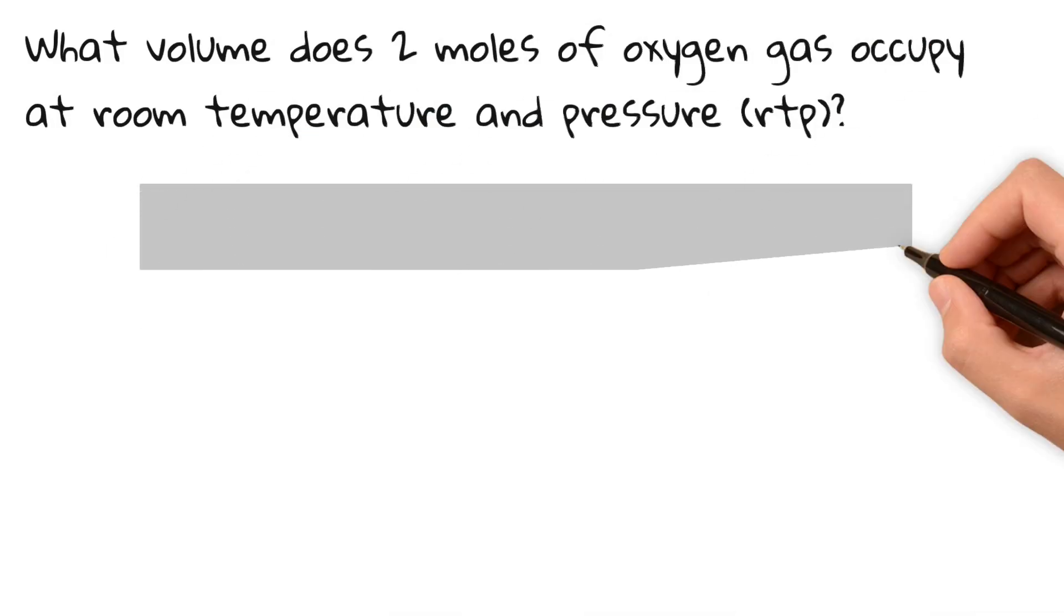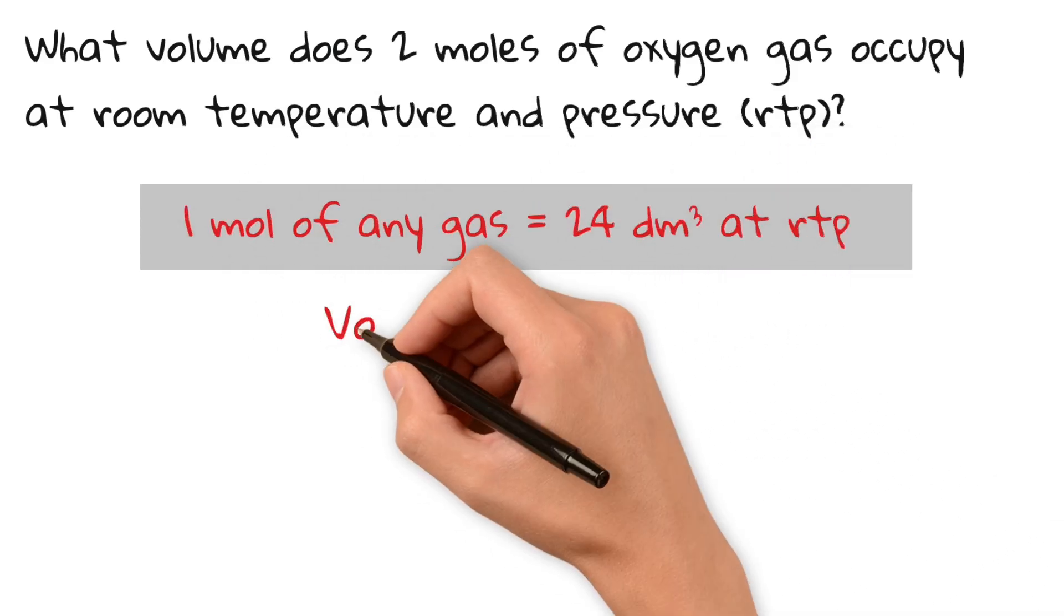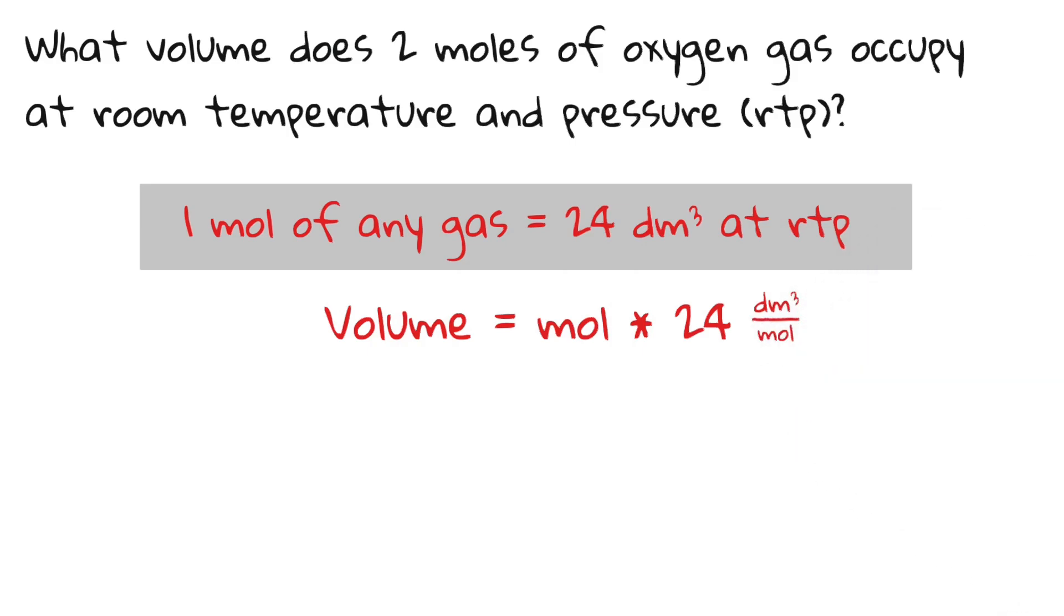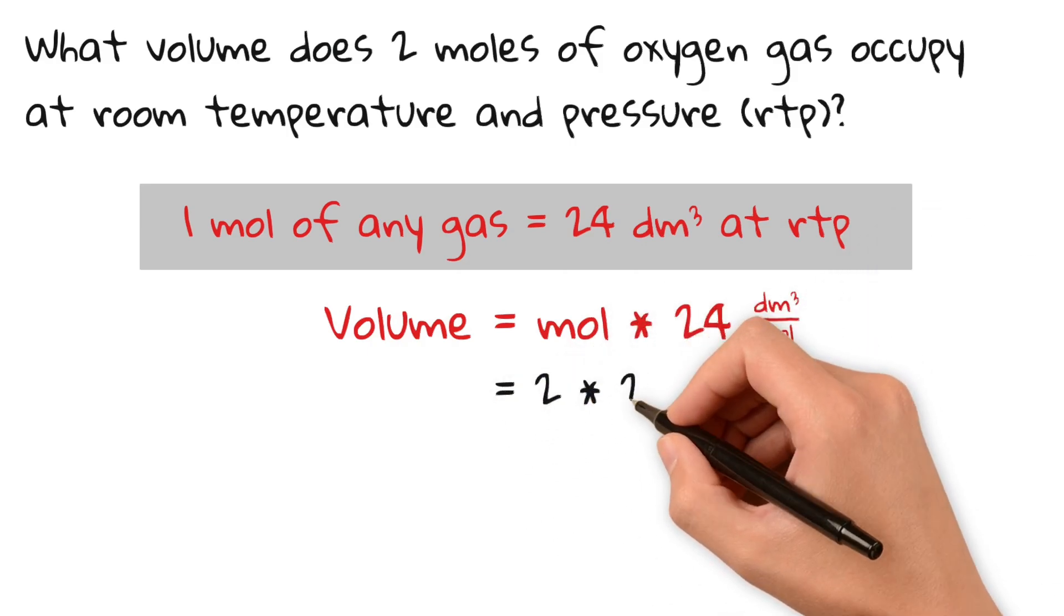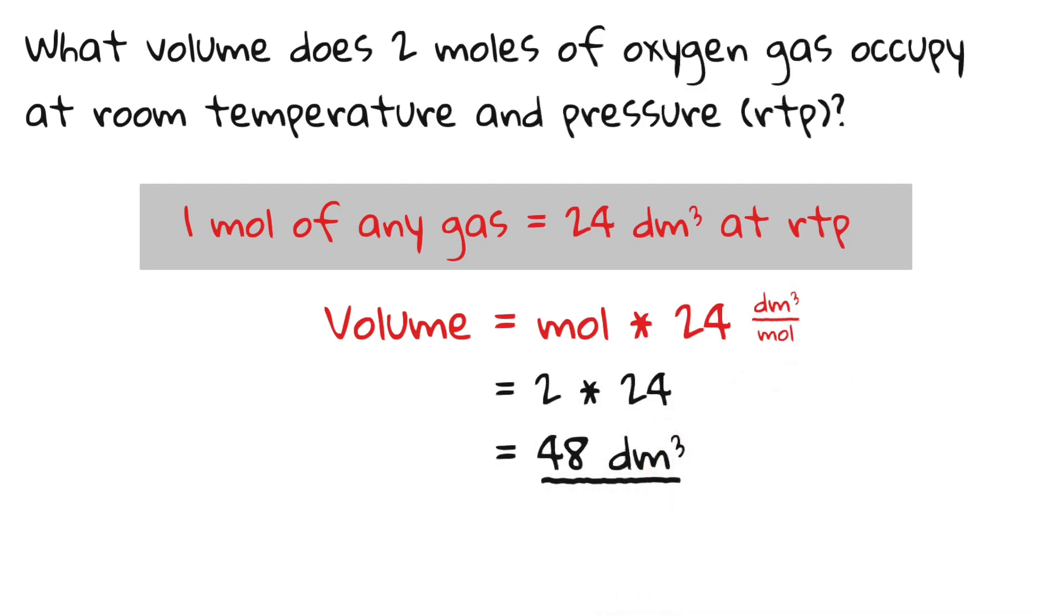Here you need to keep in mind that one mole of any gas has a volume of exactly 24 cubic decimeters at room temperature. So for 2 moles we have to multiply it by 2. 2 times 24 is 48 cubic decimeters.